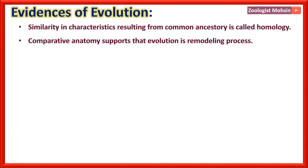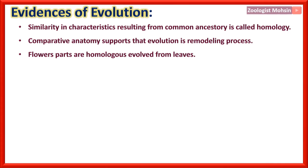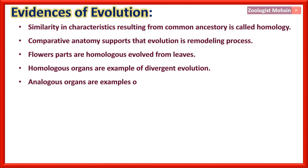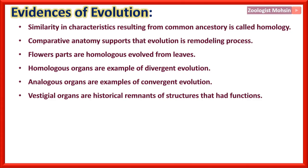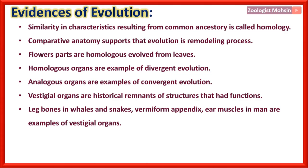Flower parts are homologous, having evolved from leaves. Homologous organs are examples of divergent evolution, while analogous organs are examples of convergent evolution — for example, wings of insects and wings of birds. Vestigial organs are historical remnants of structures that had functions in the past but are non-functional today. Examples include leg bones in whales and snakes, the vermiform appendix, and ear muscles in humans.